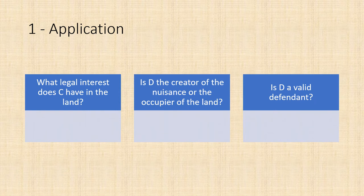In terms of application, this is where we need to focus most of our work. AO1 for AQA is explanation, AO2 is application, and AO3 is analysis and evaluation — which in reality is extended application or discussion of the key or contentious elements. For this first element, we have to consider what legal interest the claimant has in the land: are they an owner, a tenant, or do they not have an interest at all? We also need to ask whether the defendant is the creator of the nuisance — are they the creator, are they allowing it to happen, or are they the owner with a tenant causing the nuisance? We need to conclude whether the defendant is a valid defendant and show the examiner we know who the claimant and defendant are.